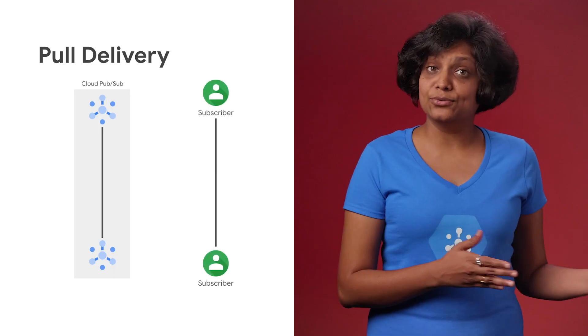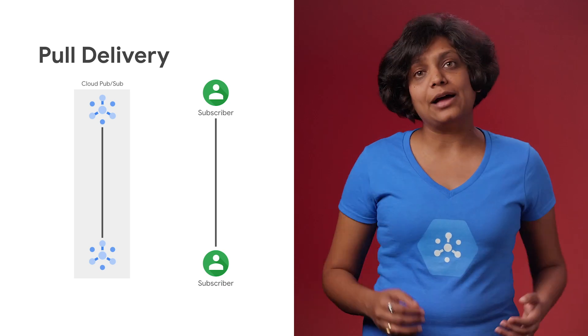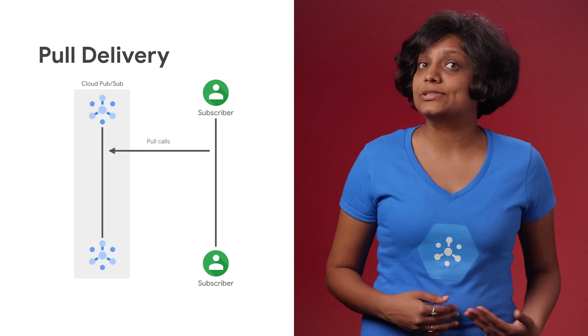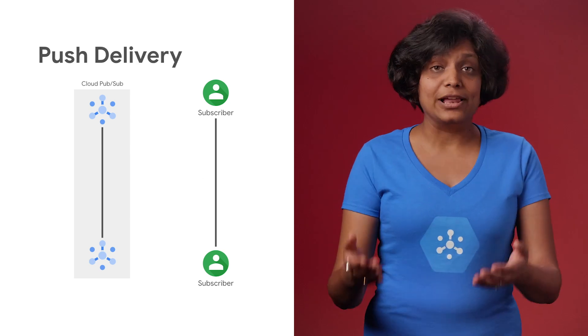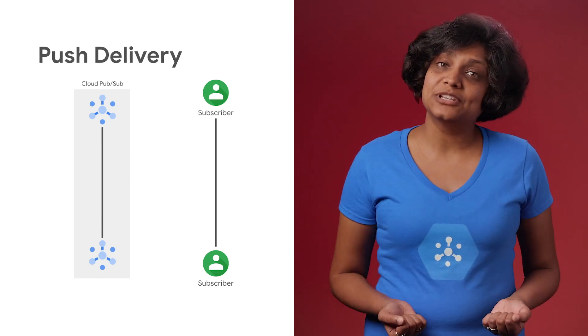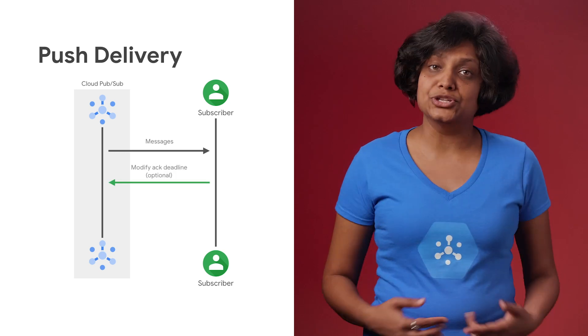In the last episode, we learned that in pull delivery, the subscriber application initiates the request to the Cloud PubSub to receive messages. While in push delivery, Cloud PubSub initiates the request to the subscriber application to deliver messages. How do we choose between push and pull mechanism for our use cases? Let's look at this step by step by comparing a few properties.